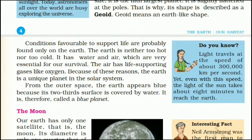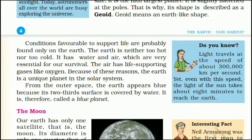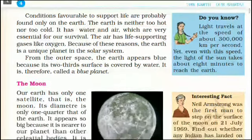Do you know? Light travels at the speed of about 300,000 km per second. Yet even with this speed, the light of the sun takes about 8 minutes to reach the Earth.